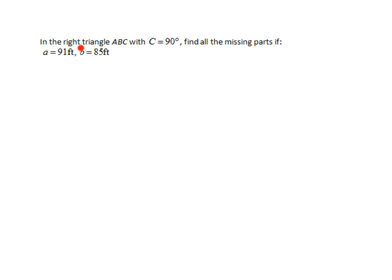In this problem, I'm given that I have a right triangle ABC with angle C equaling 90 degrees. I have to find all the missing parts if I'm given side a is 91 feet and side b is 85 feet.